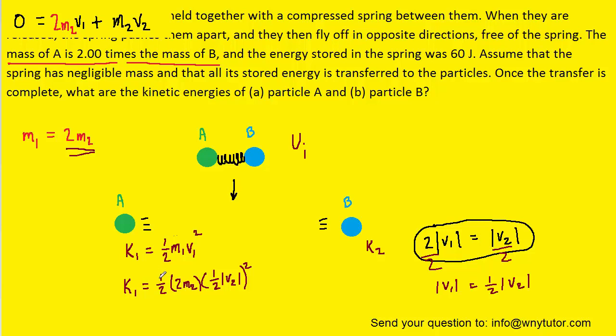We can simplify this a little bit. This one-half multiplied by the two, they're going to cancel each other out, and then we can square the one-half to make one-fourth and also square the v2. So here we have one-fourth times m2v2 squared.